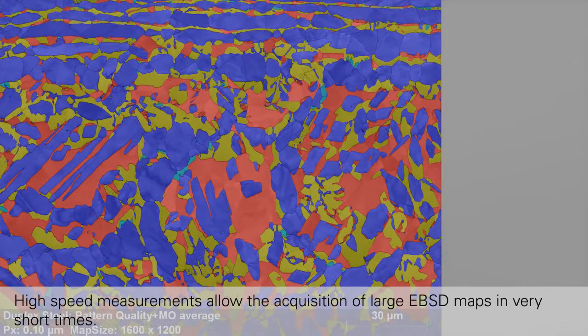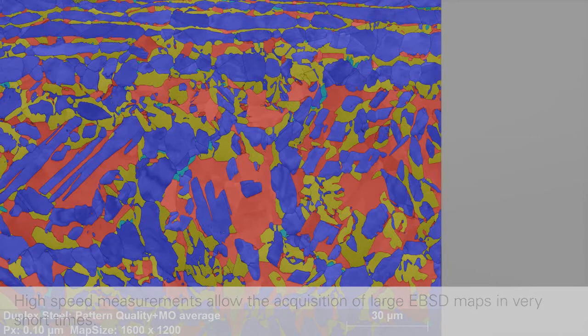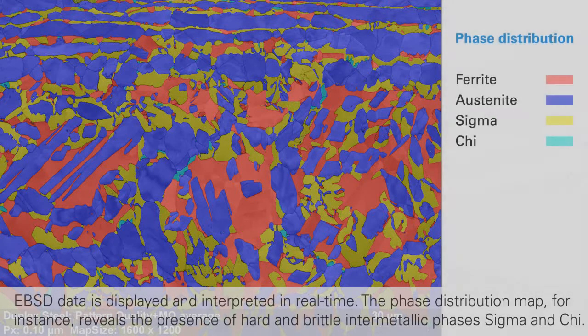High-speed measurements allow the acquisition of large EBSD maps in very short times. EBSD data is displayed and interpreted in real-time.